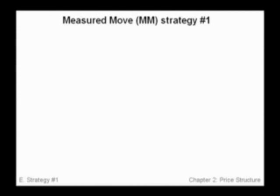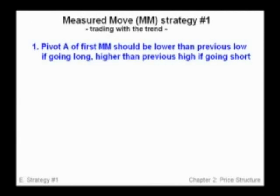Here are the rules to trade the measure move strategy. Number one: pivot A of the first measure move should be lower than the previous pivot low if going long, and higher than the previous high if going short.